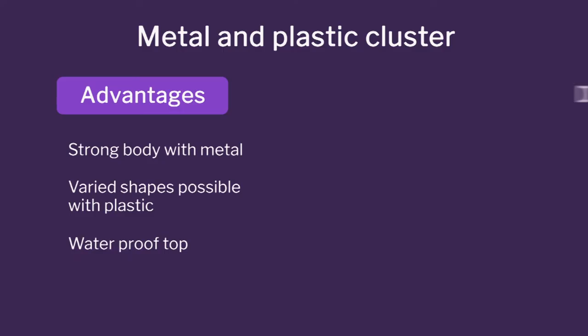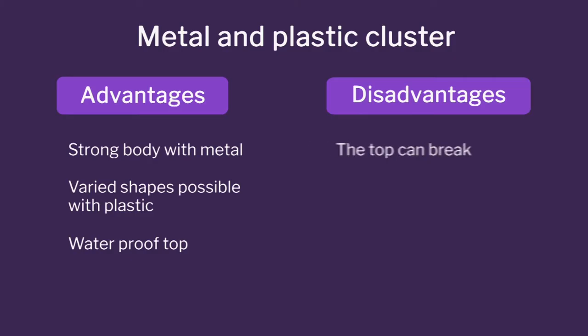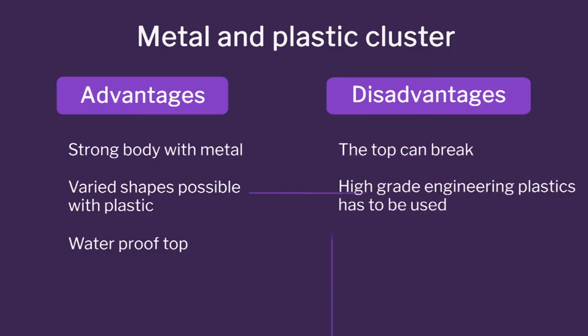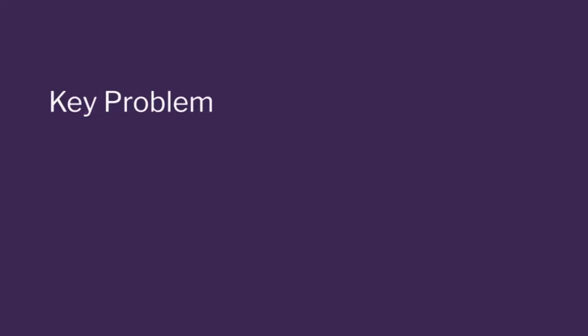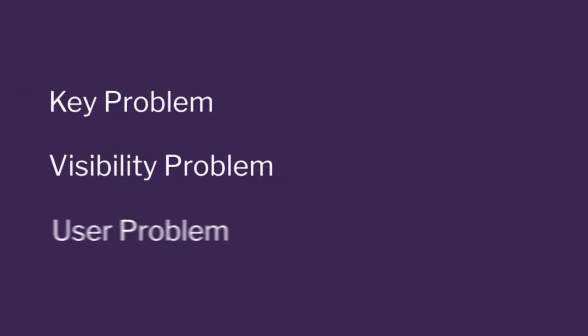But still, if somebody hits the top it can break, so you need to work out engineering plastics so the top molded part will not break. The disadvantages can be reduced, but the cost is very high because you have both plastic and metal. Also, remember that in each cluster we have ideas addressing one specific problem — the keys problem, the visibility problem, the user problem — and all those ideas are now put together.